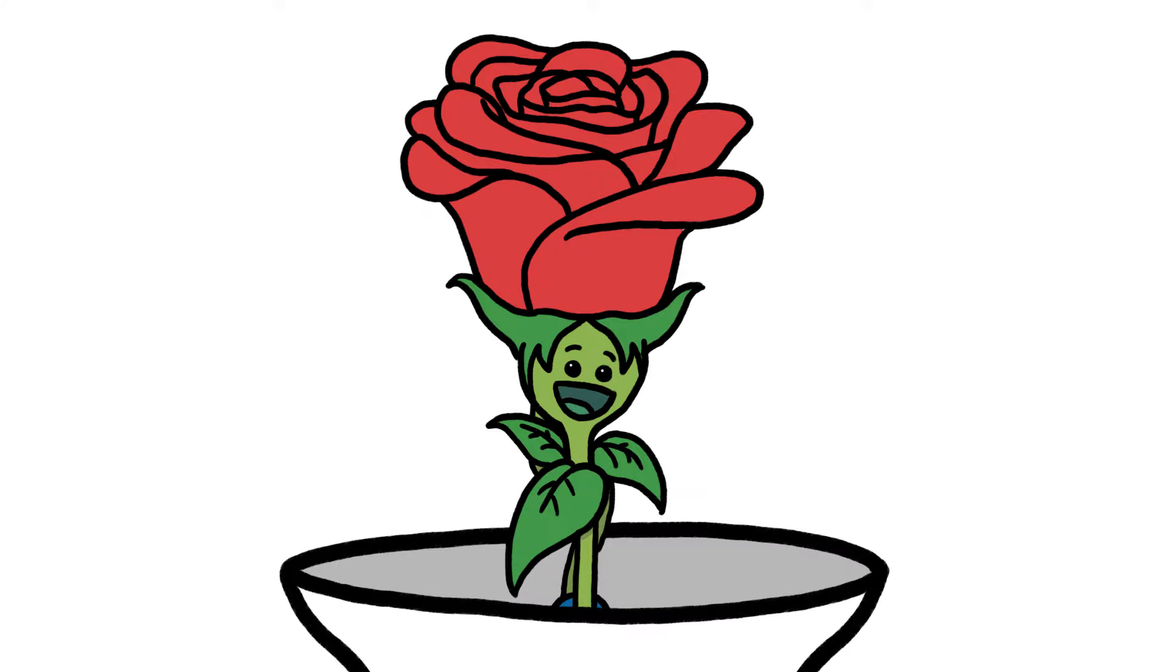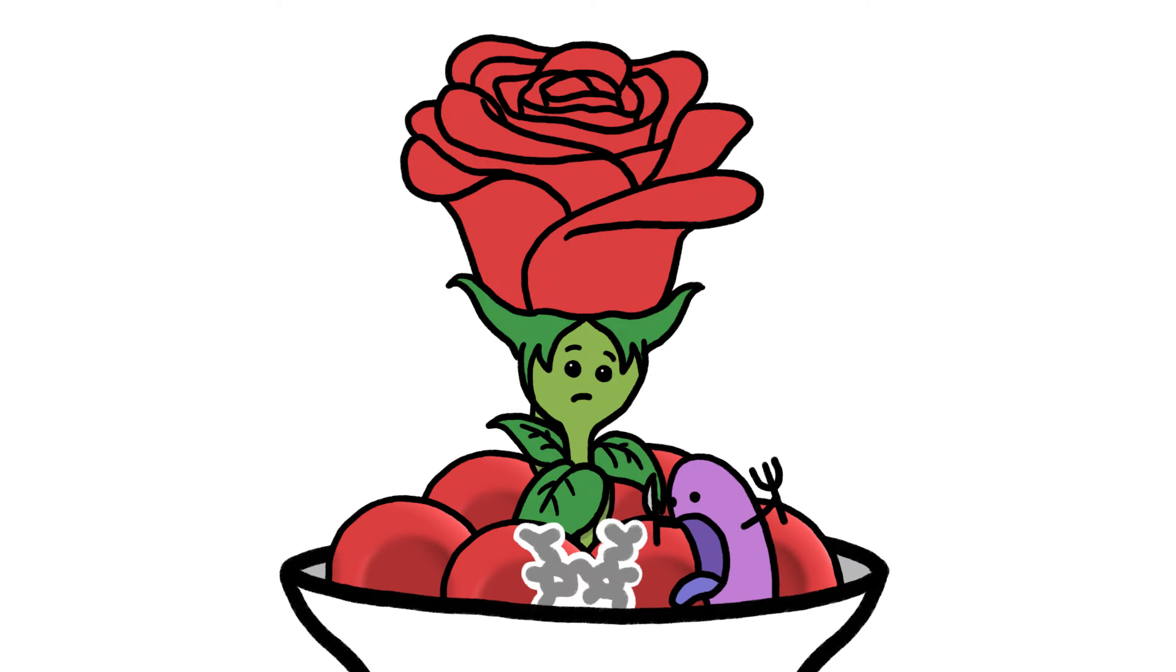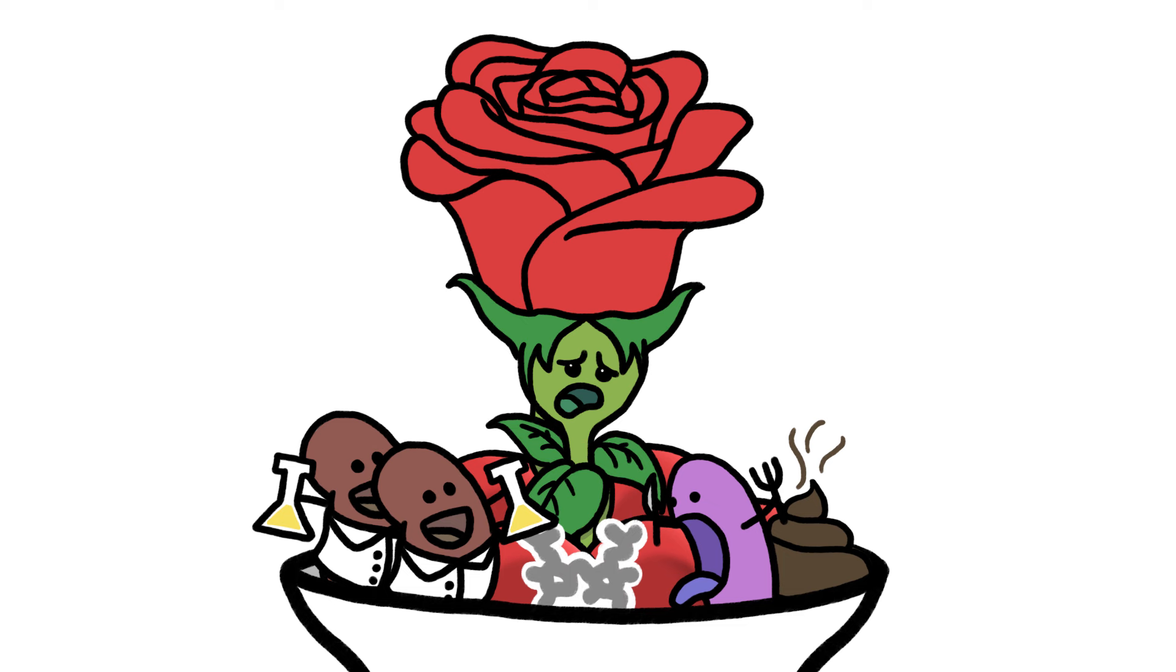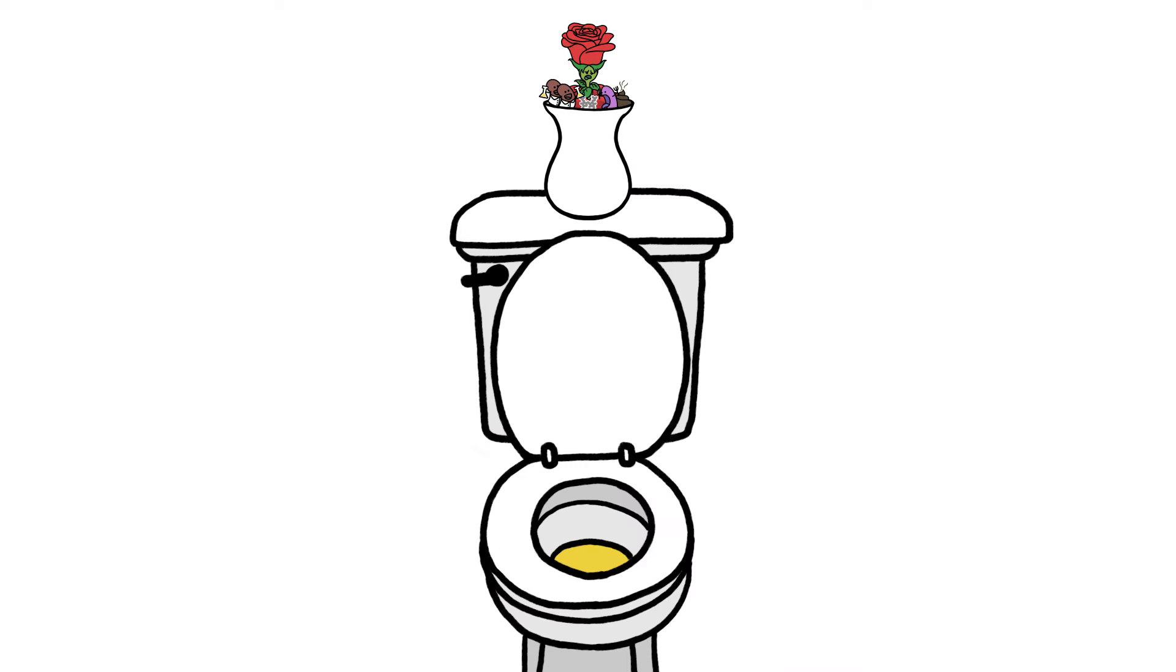In short, roses are red, red blood cells are too, bacteria turn them into the brown of our poo, except when our kidneys end up making them yellow. In which case, always remember to let it mellow.